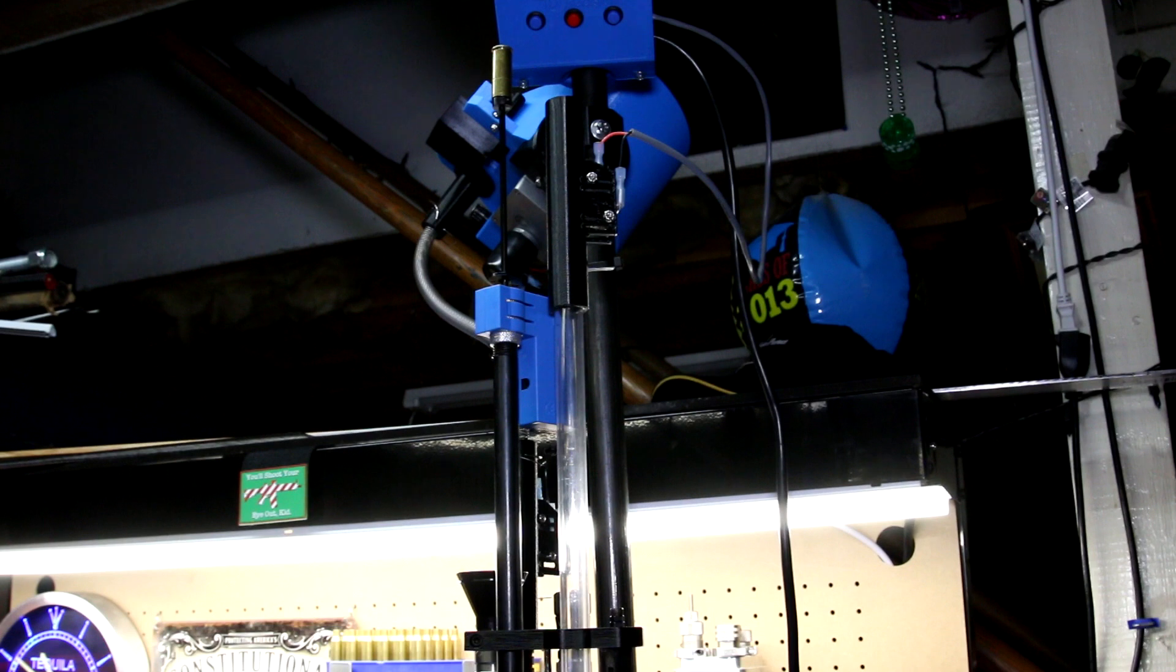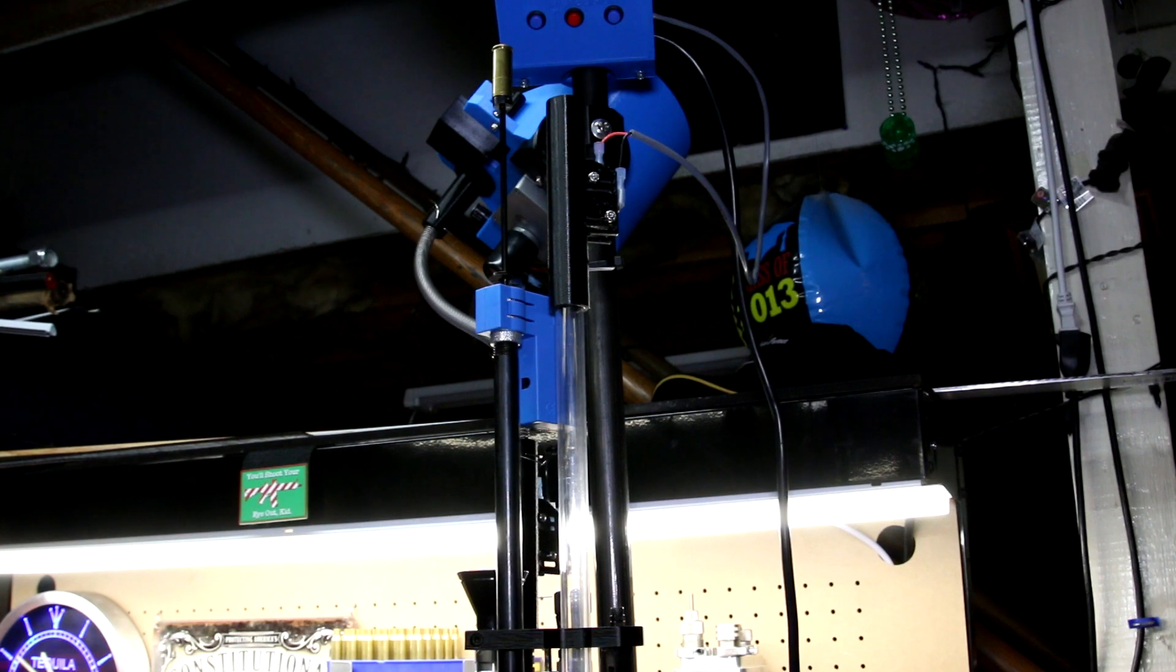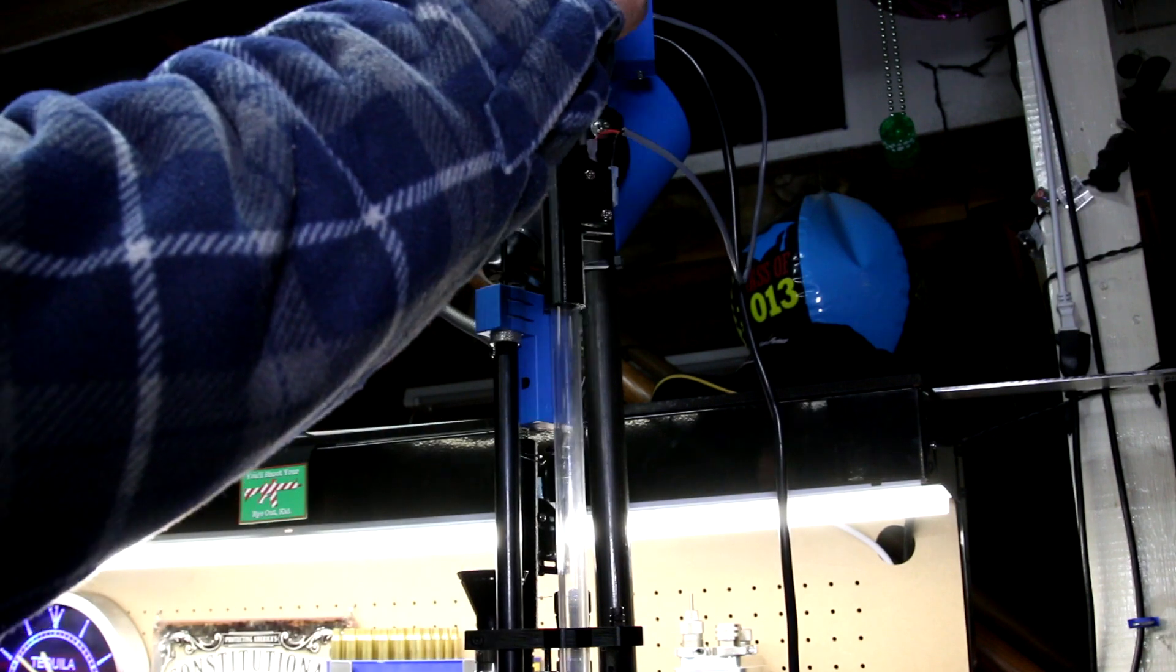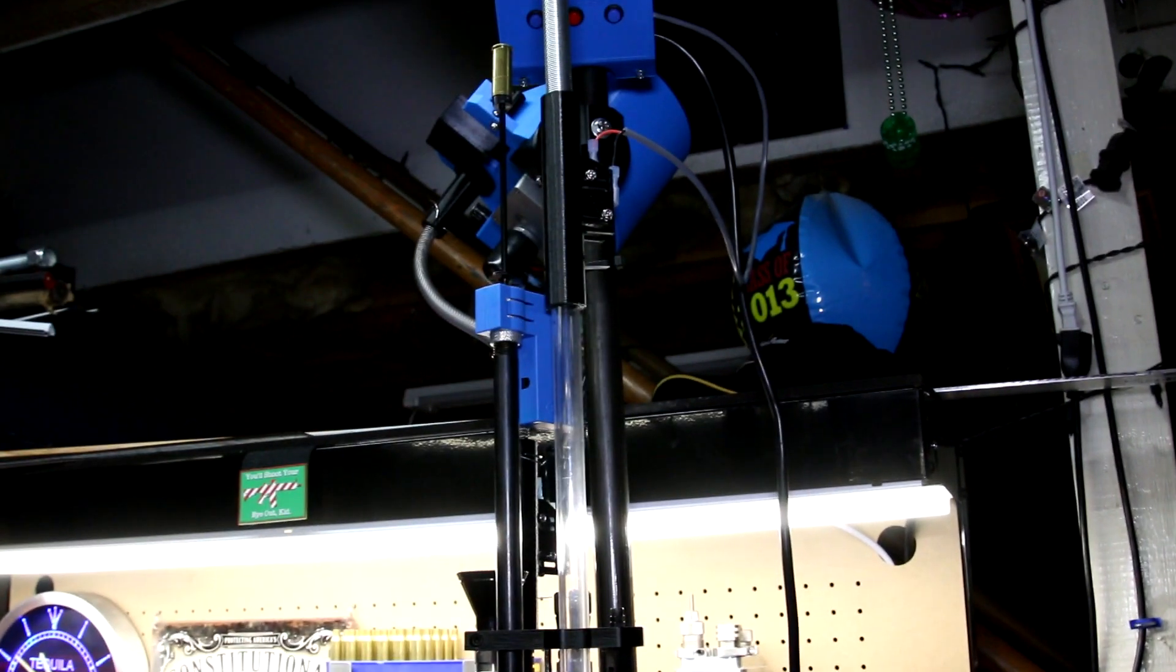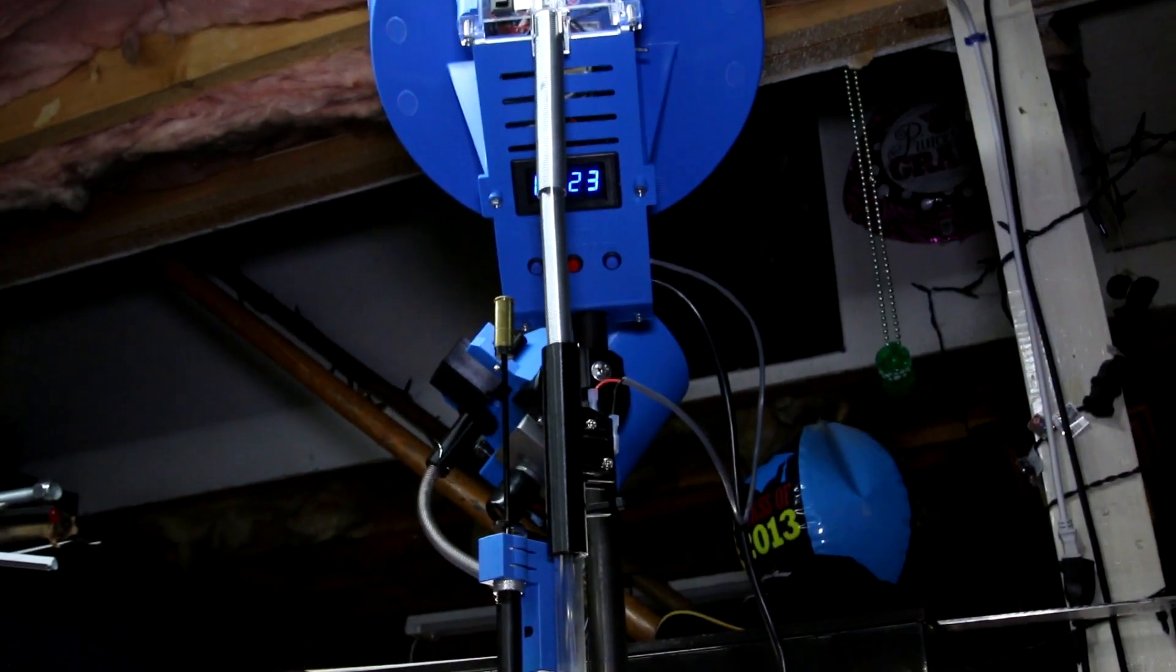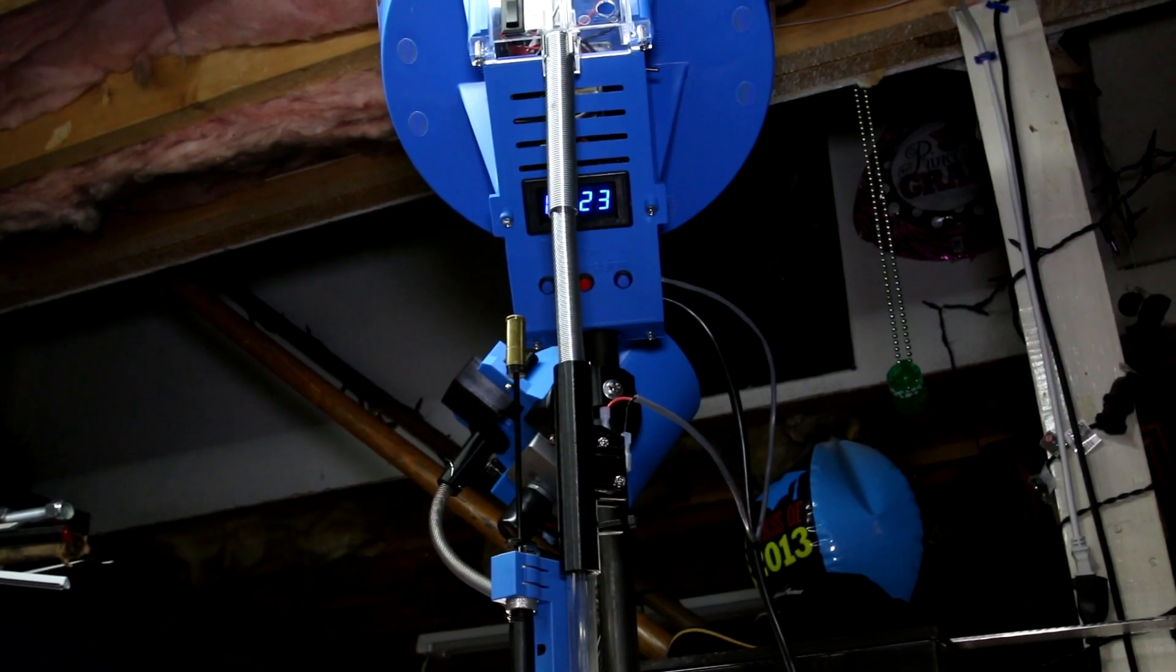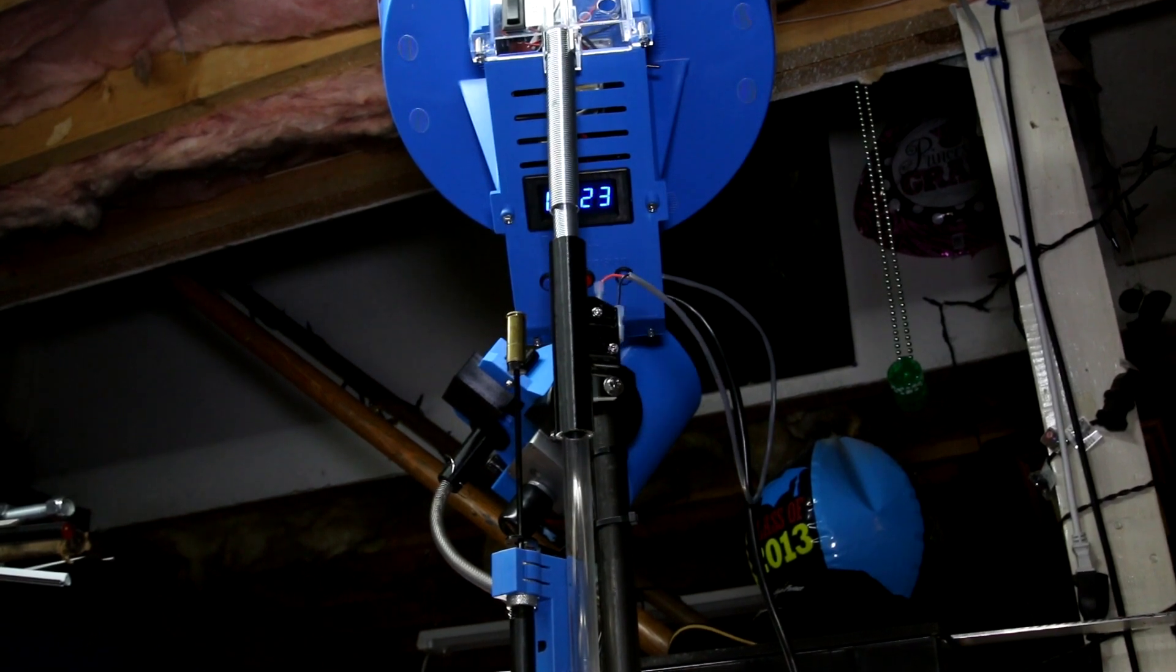And now what's interesting about this setup here, unlike any other case feeder, is typically a case feeder is stationary—none of it's all fixed, none of the feeding system actually moves up and down. And this system here, because the feeder is attached to the ram, it actually goes up and down while you're moving it. So we'll get you a better view of that. You will see as the ram goes up, so does the case feed tube.